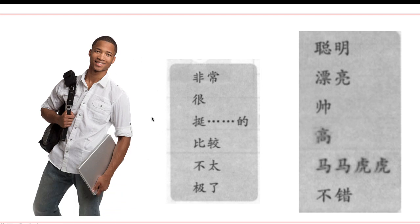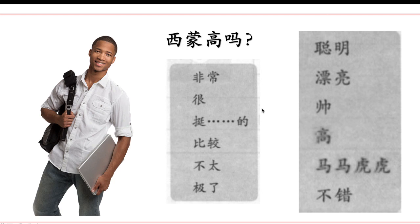So here it comes. Who's this? 这是谁？这是西蒙。This is Simon. 西蒙高吗？西蒙帅吗？Let's practice: 西蒙非常高。西蒙很高。西蒙挺高的。西蒙比较高。西蒙不太高。西蒙高极了。